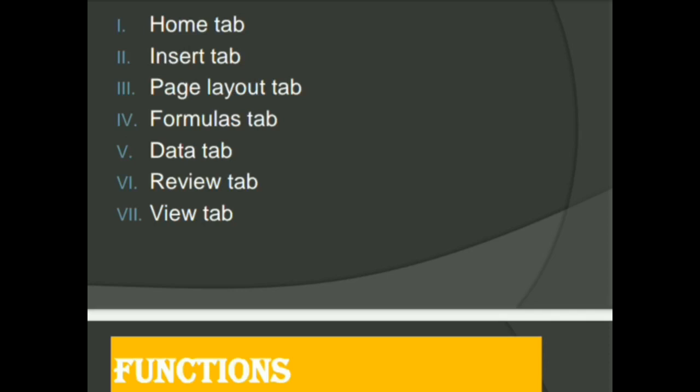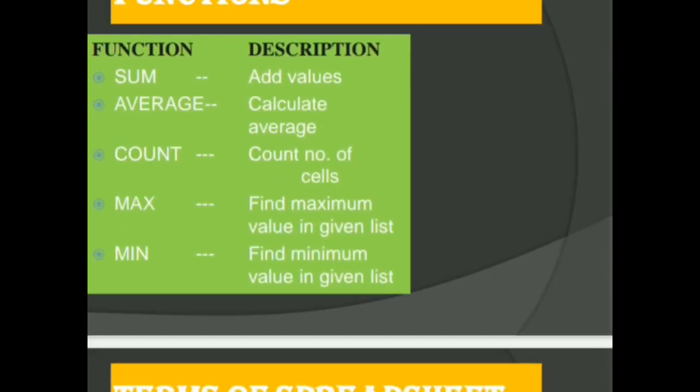Next is the functions. Functions, as I told you, these are predefined formulas with the help of which you can calculate specific values in a particular order. By default there are five functions in MS Excel: SUM, AVERAGE, COUNT, MAX, MIN. By using SUM you can add values. AVERAGE calculates the average. COUNT counts the number of cells. MAX finds maximum value in given list. MIN finds minimum value in given list. These are by default functions present in MS Excel.